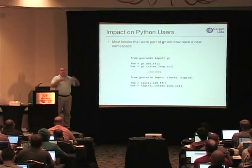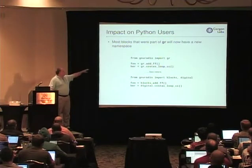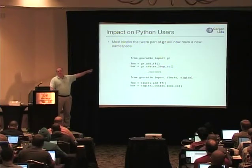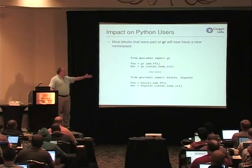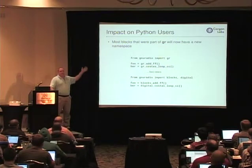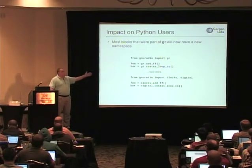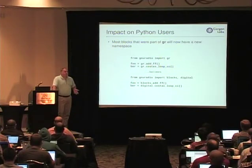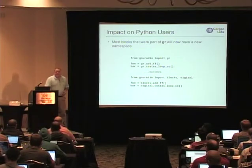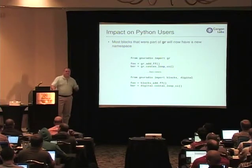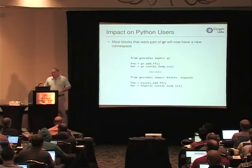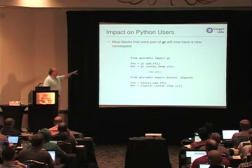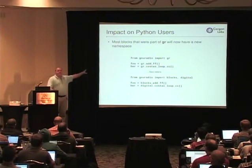You had foo = gr.add_ff() and with the renaming of namespaces, that'll be foo = blocks.add_ff(). The syntax for creating a new instance of a GNU Radio block from Python doesn't change. The impact is going to be your imports — a lot of things that were in LibGNU Radio Core just ended up in GR, but now you'll be importing blocks or digital or filter or fec or wavelet and using that namespace with your block name. It's a fairly mechanical change that you may even be able to automate with scripting.